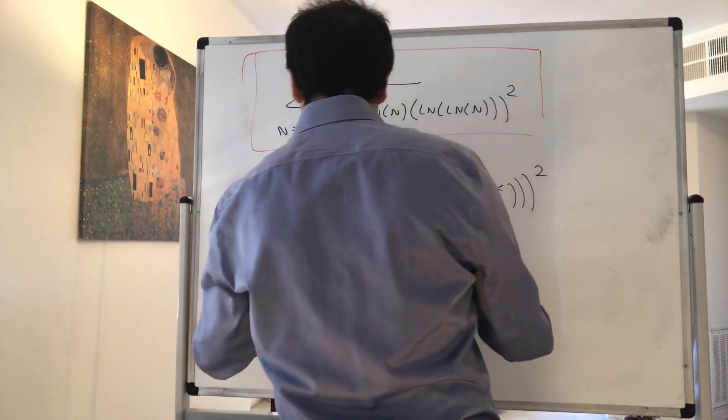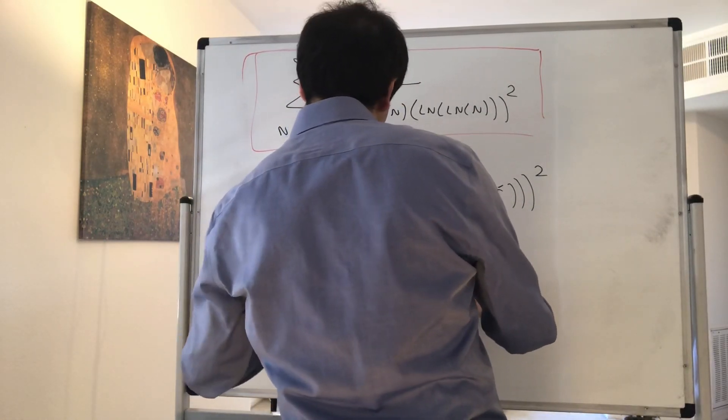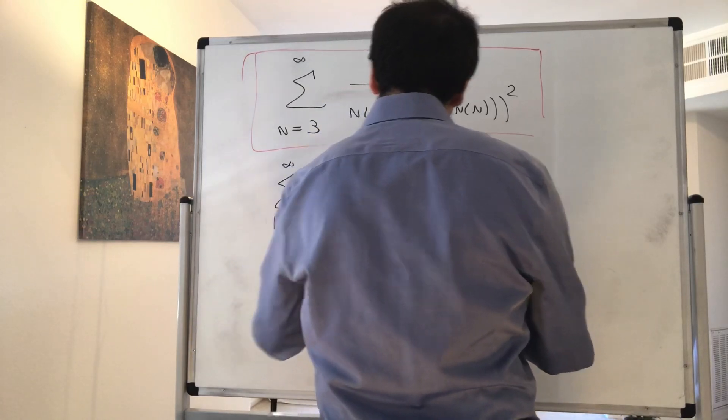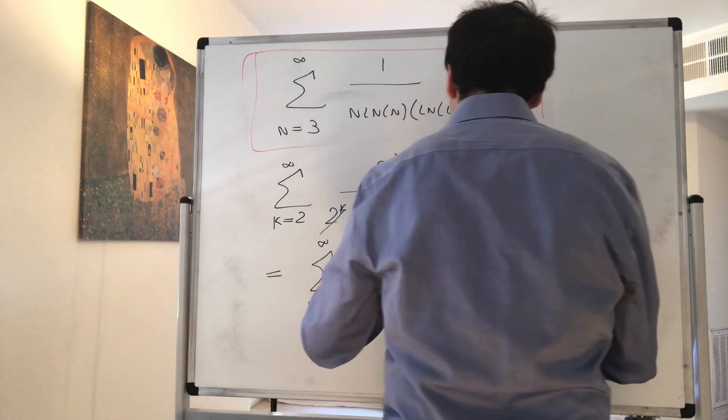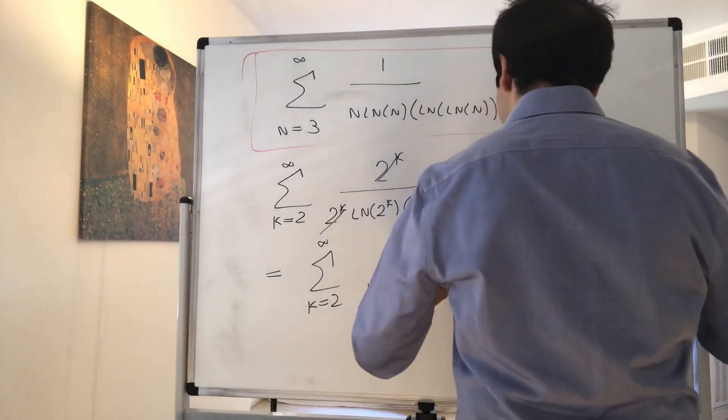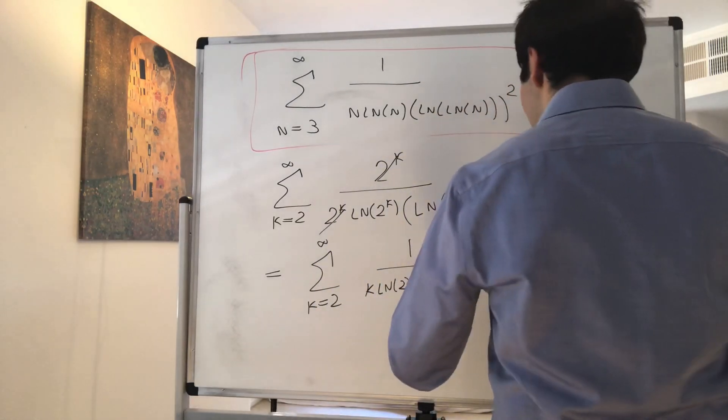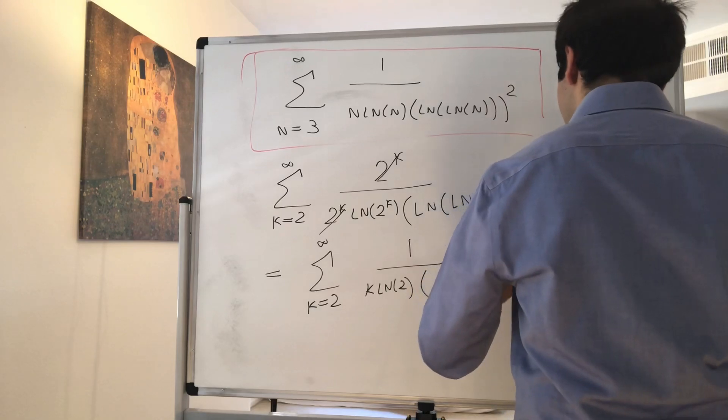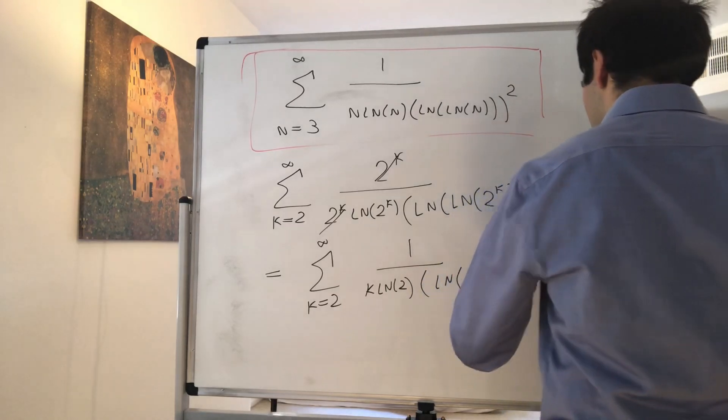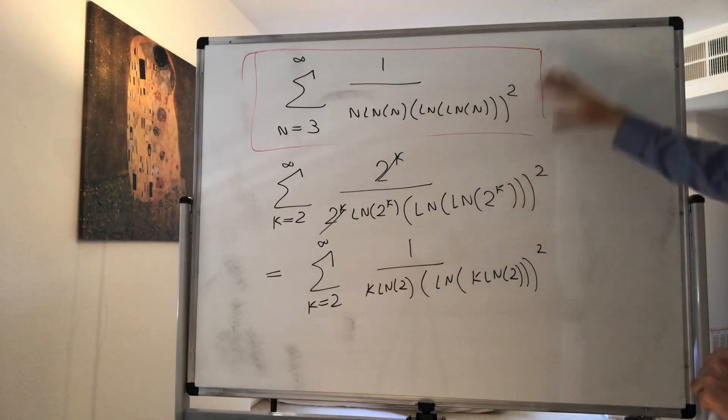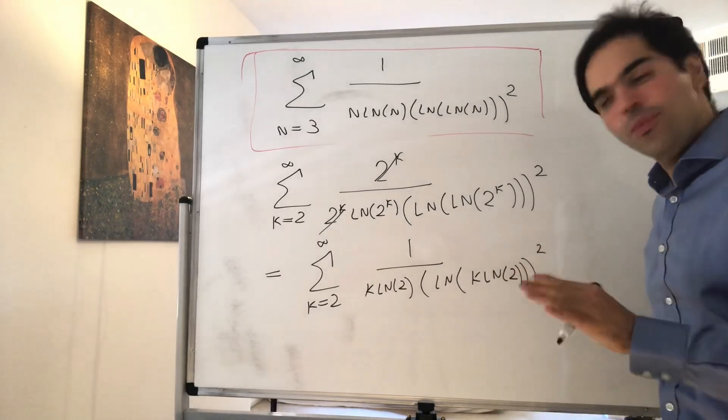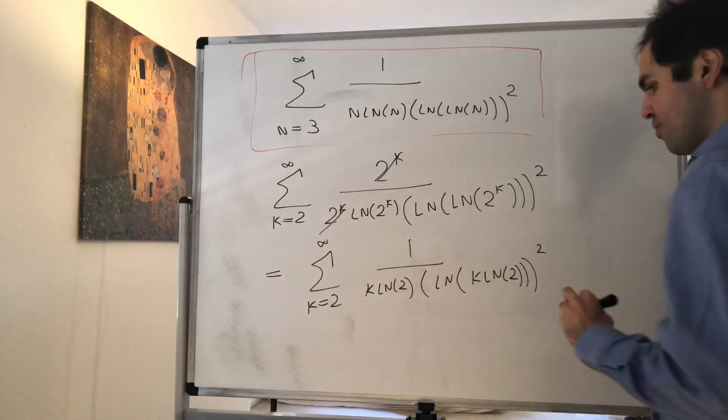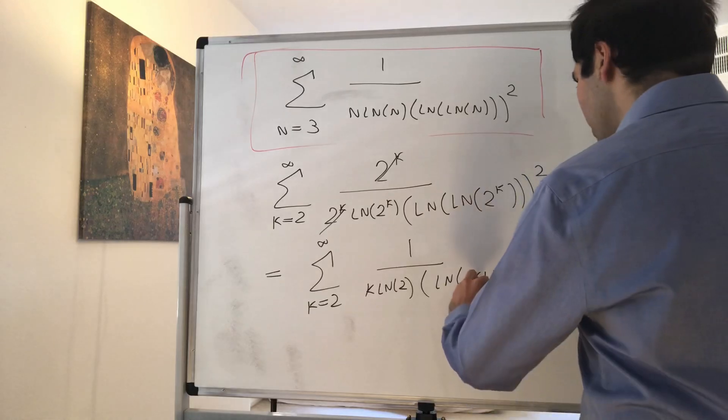And we get that this is the sum from k equals 2 to infinity of 1 over k ln of 2 times ln of k ln of 2 squared. Before, we had that the series is greater than the divergent series, but this time what we want is the series to be less than a convergent series.